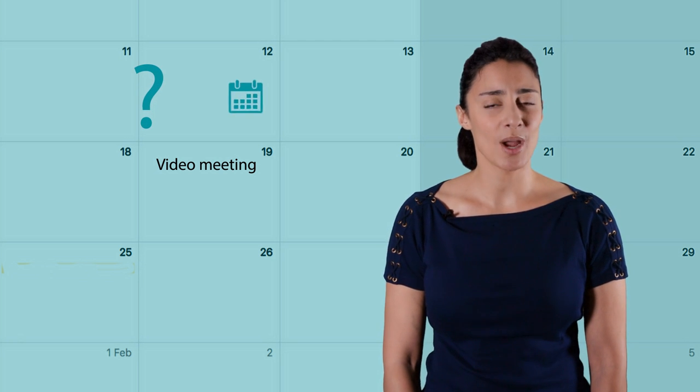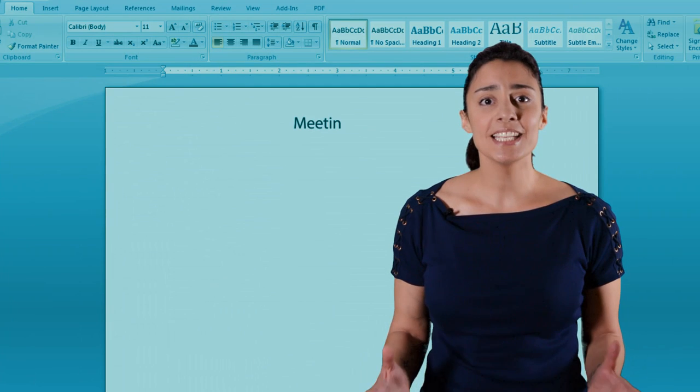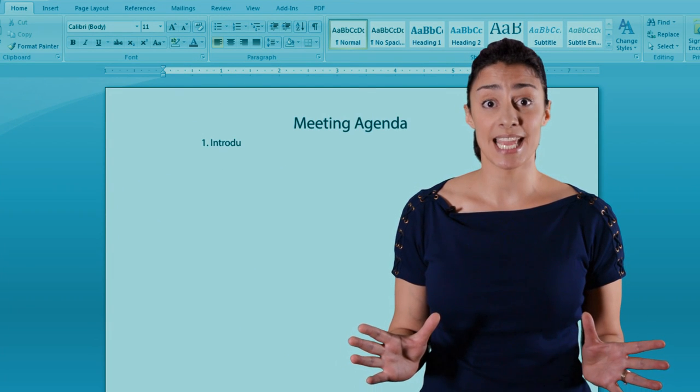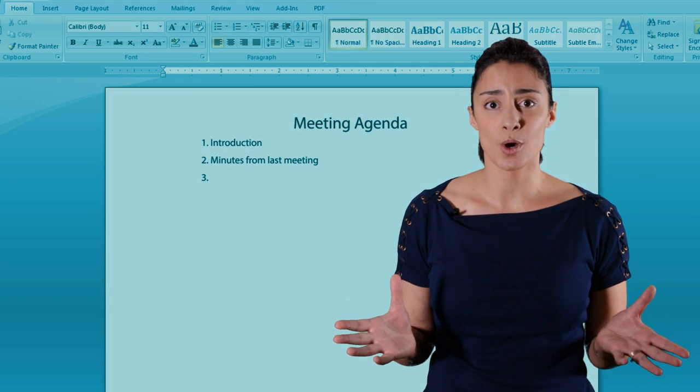Decide how and when you're going to connect with your team. Make an agenda so that everybody has clear expectations of what's going to happen in the meeting and they understand why you're connecting.